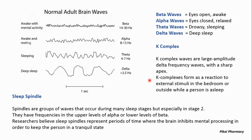Sleep spindles are groups of waves with frequencies between alpha and beta waves, and they mostly occur in stage 2 of the NREM sleep cycle. Researchers believe that sleep spindles represent the period of time when the person is in a very restful condition during sleep.